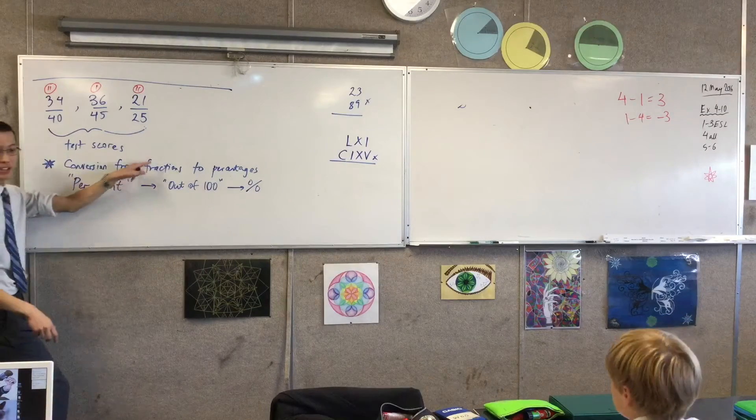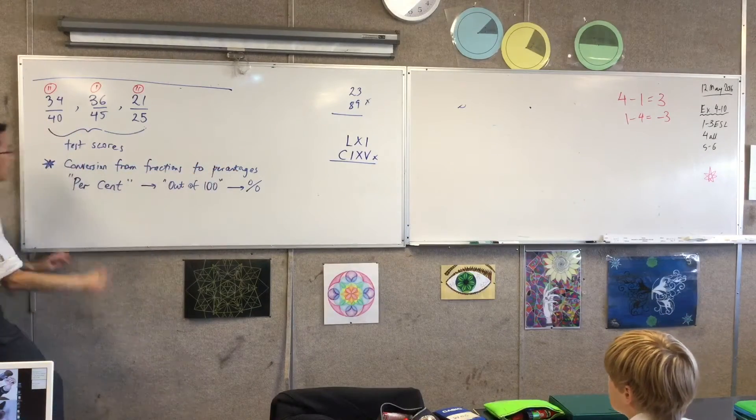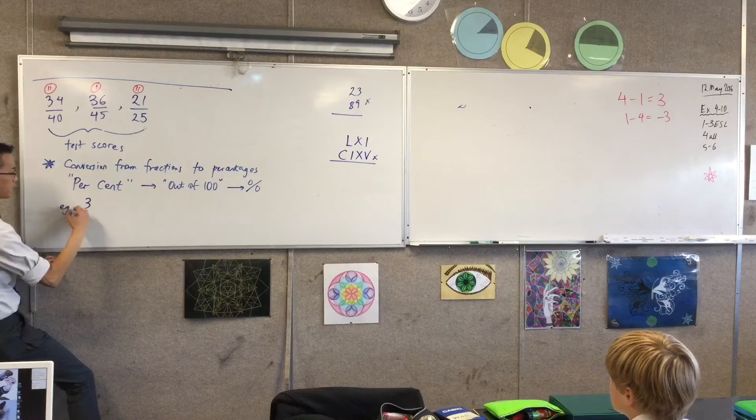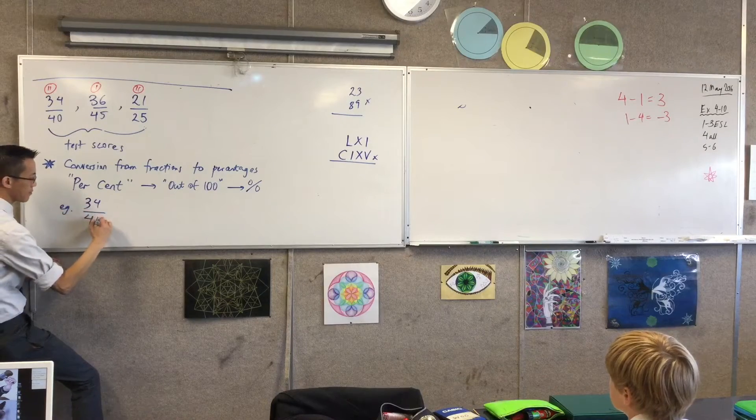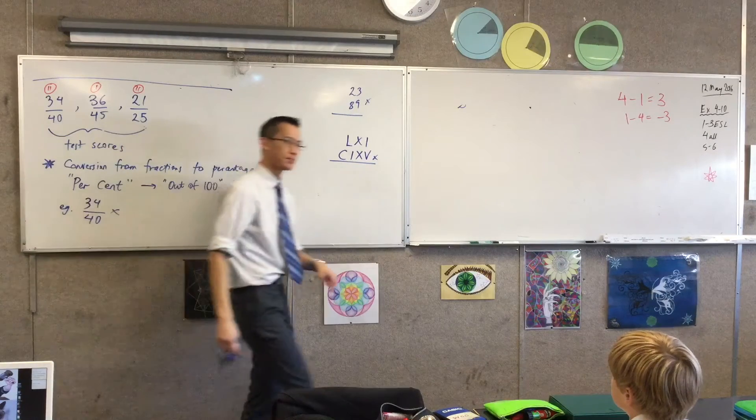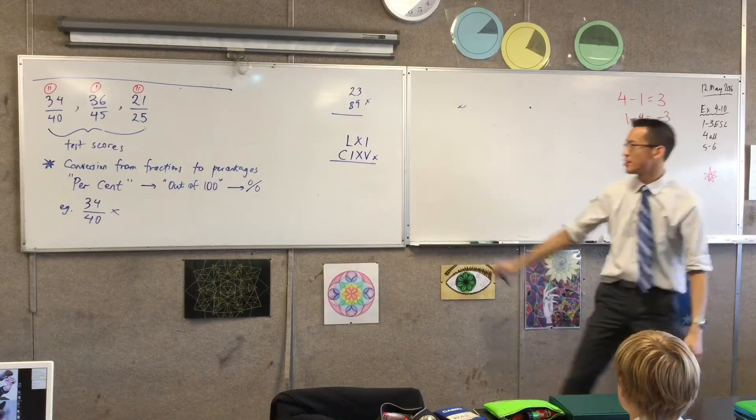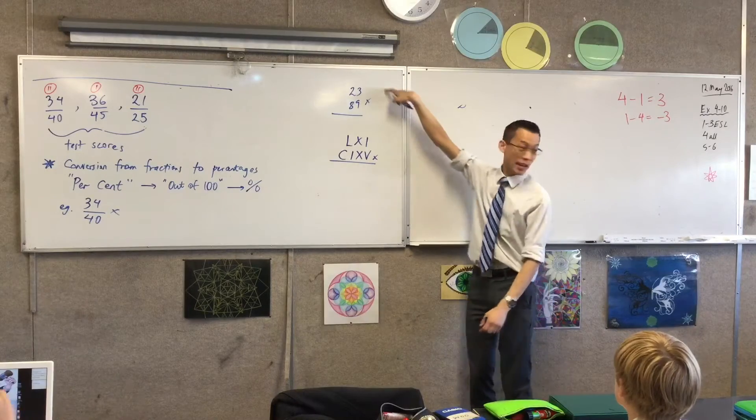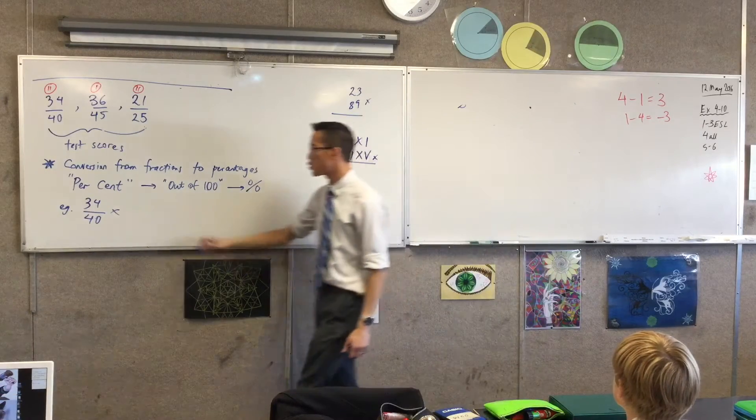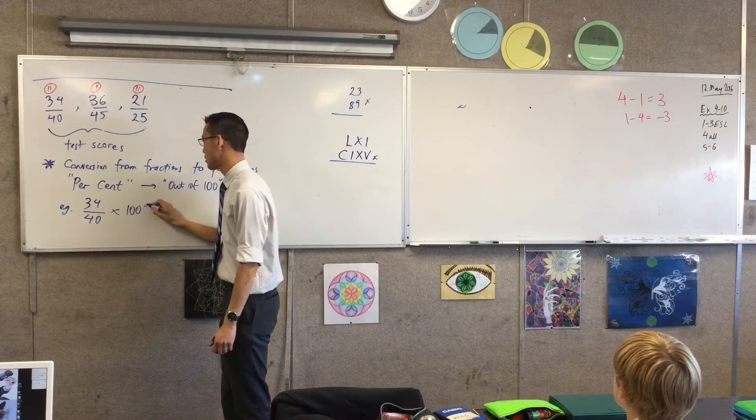To get a fraction and turn it into a percentage, I'm going to take, and we'll do this with the first number, we'll do it with all of them actually. I'm going to take a number, and I don't want to change the number, I just want to make it look a little bit different, just like here, so that I can work with it easier. So I'm going to multiply by 100%.